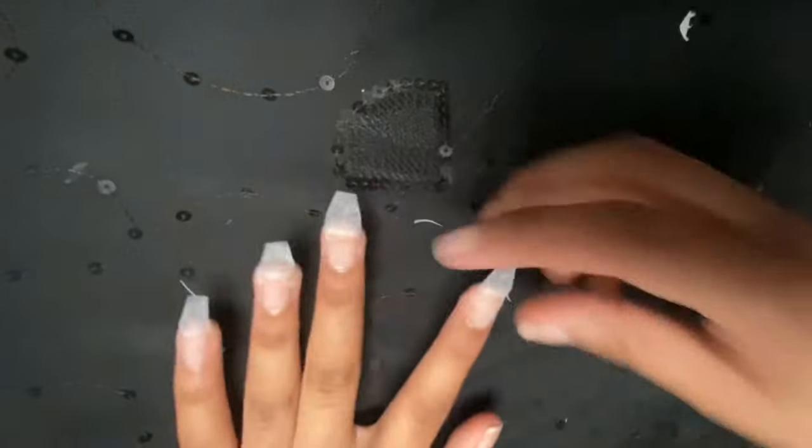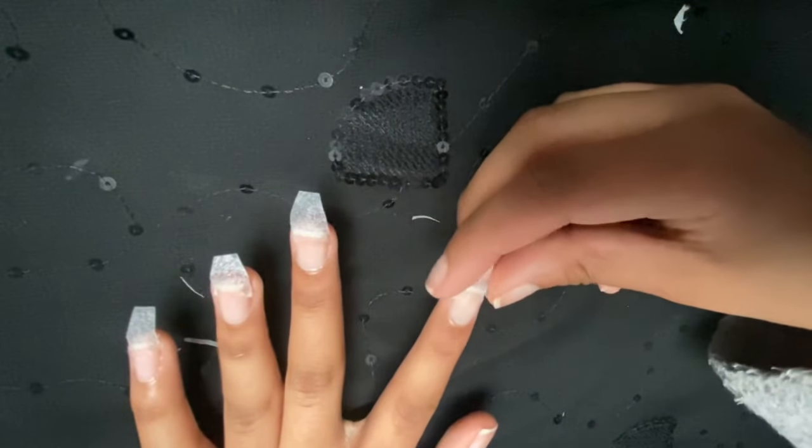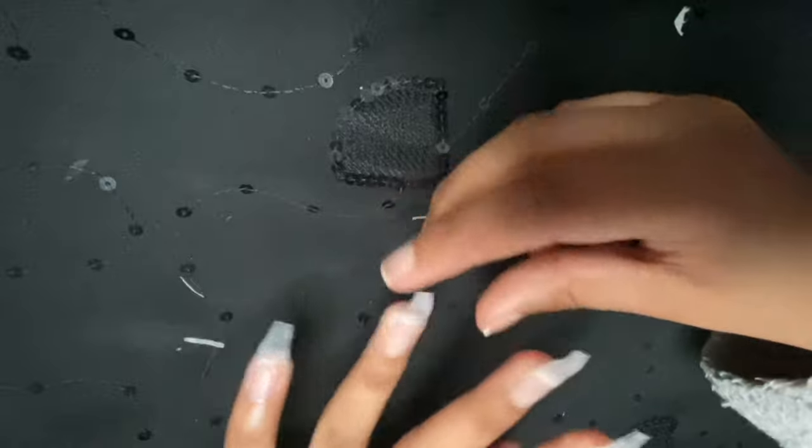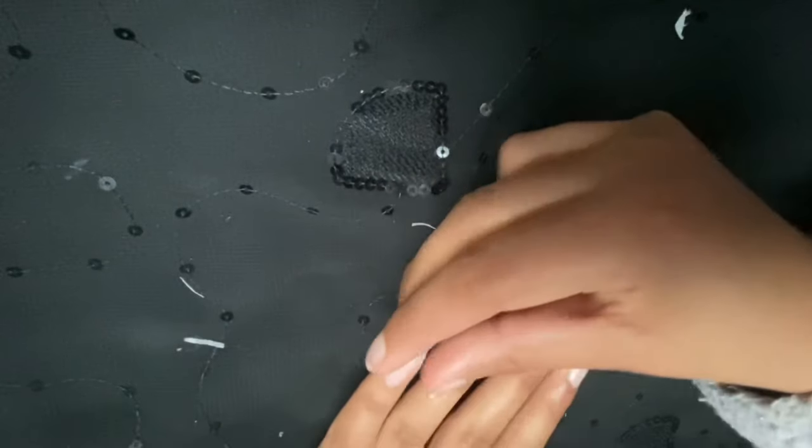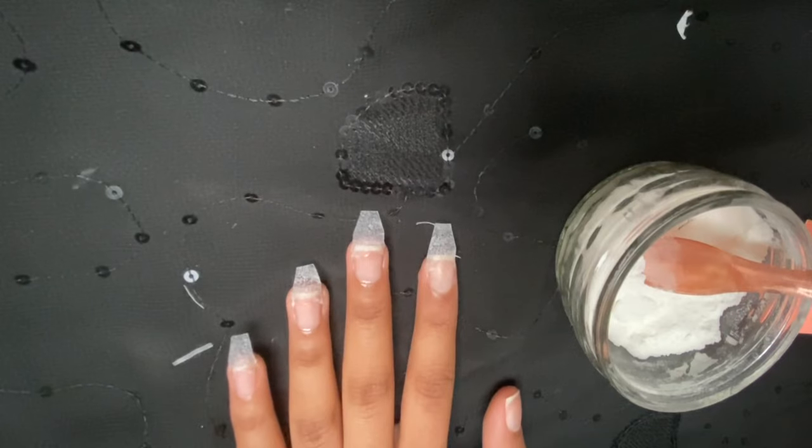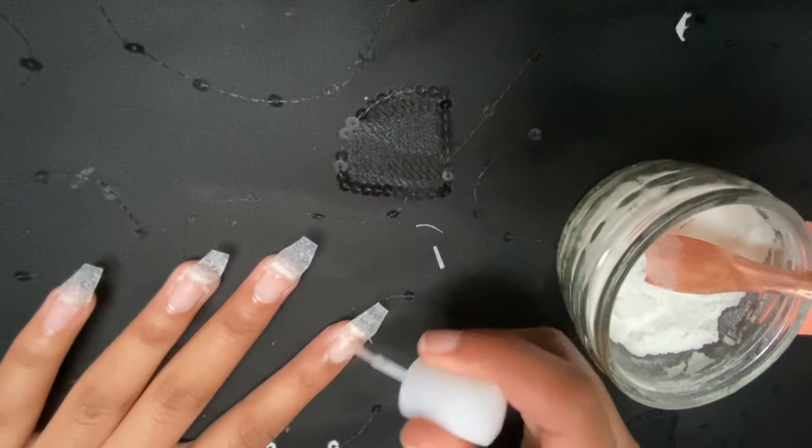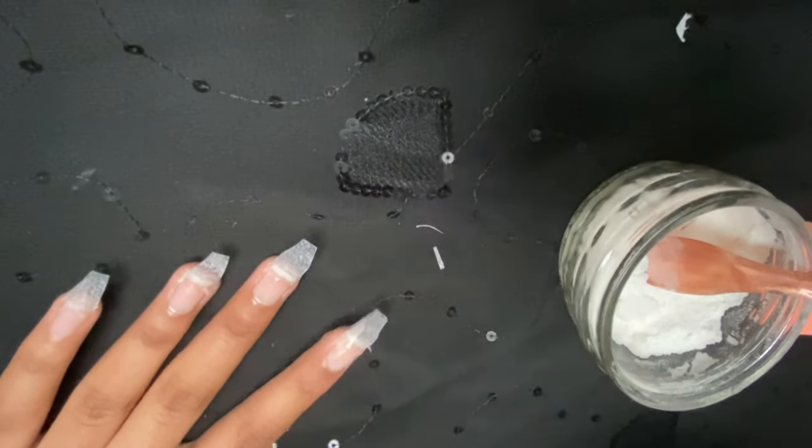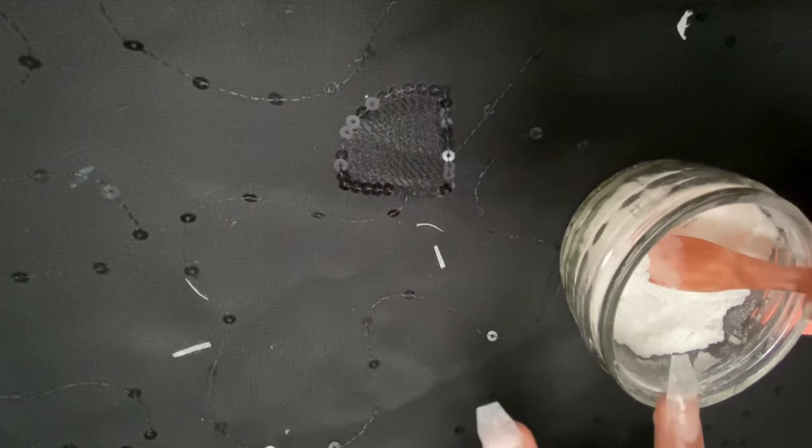Next, gently curve it with your fingers. Now I'm just layering flower and glue to build up the nail. My method is to glue from the center and then slowly make my way outwards.